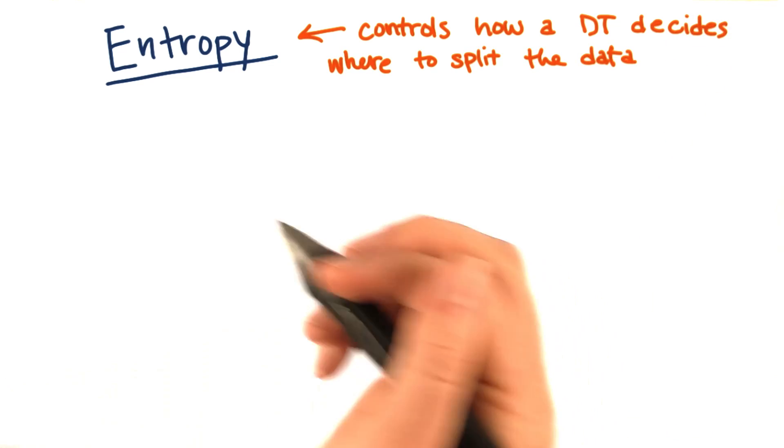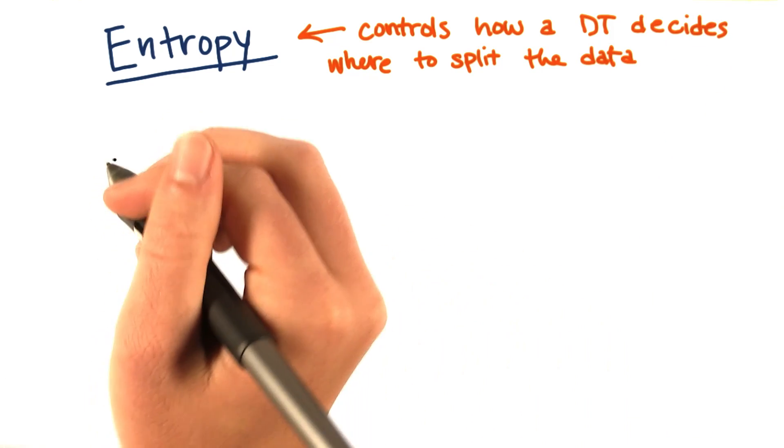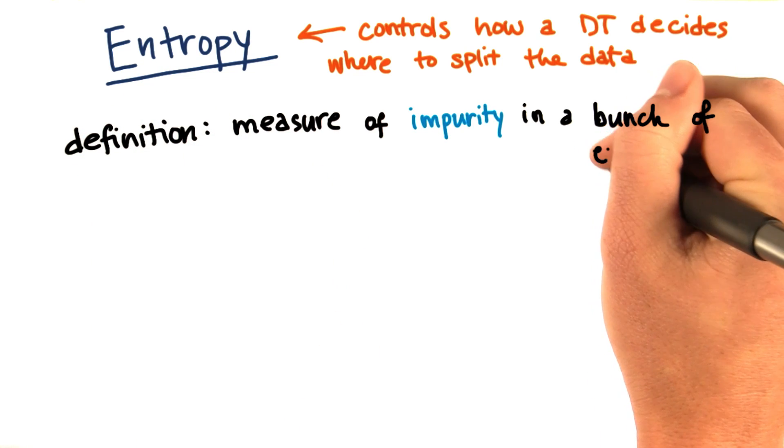So entropy is this very powerful thing. What's the definition? It's a measure of impurity in a bunch of examples.